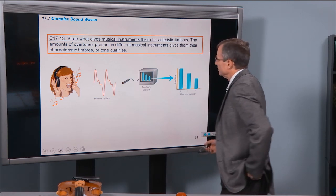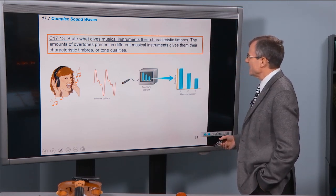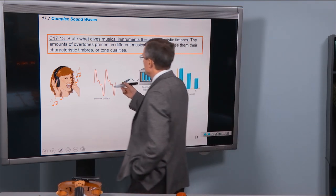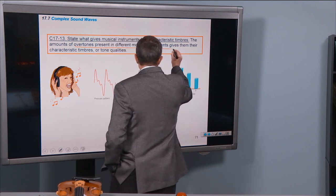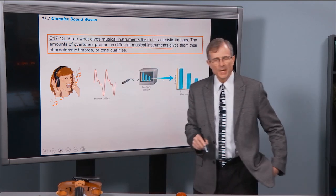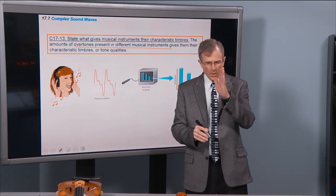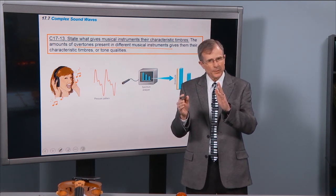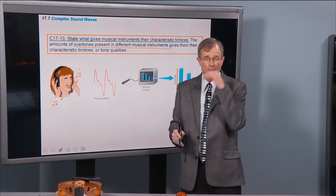Musical instruments, what gives them their characteristic timbres, is the amount of these overtones present in the different musical instruments. The flute has a very pure sound. It has a lot of the fundamental, a little bit of the second harmonic and a little bit of the third harmonic, but very little of the higher harmonics.